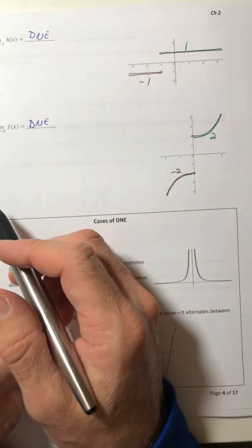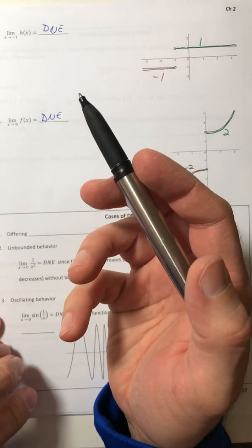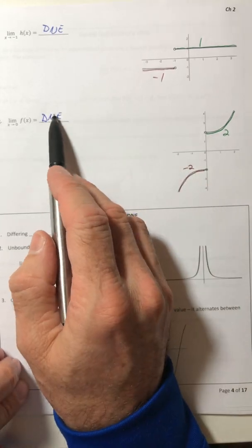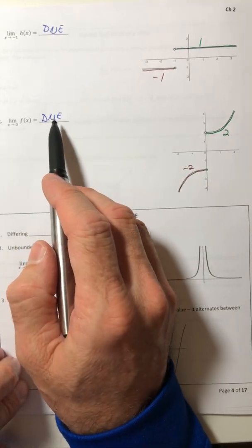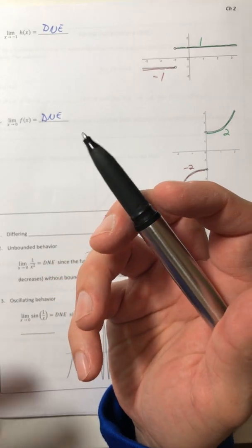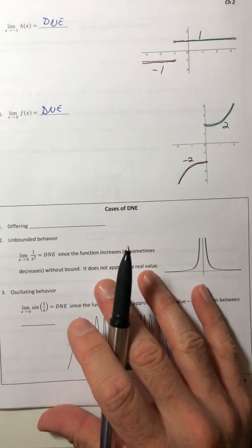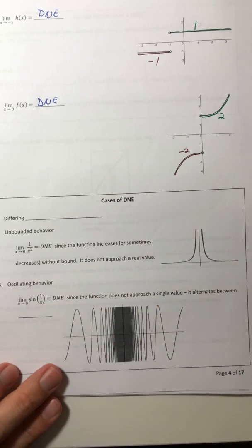I taught high school for several years and so when the movie Mean Girls came out, they were very excited about when the limit does not exist because she proclaims that in some math competition. You can check it out if you want. It's actually kind of funny. Okay.